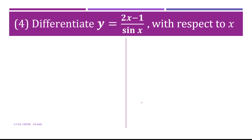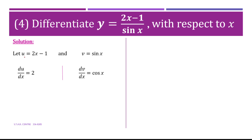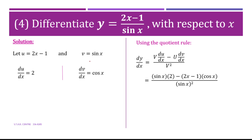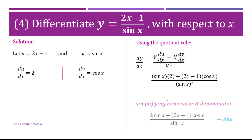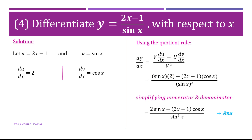Number 4: differentiate y equal 2x minus 1 over sin(x) with respect to x. Let u equal 2x minus 1 and v equal sin(x). Differentiating: du/dx equals 2 and dv/dx equals cos(x). Using the quotient rule and substituting: v is sin(x), du/dx is 2, u is (2x minus 1), dv/dx is cos(x). Expanding and simplifying: sin(x) times 2 gives 2sin(x), minus (2x minus 1)cos(x). This is accepted as the answer; further expansion is optional.